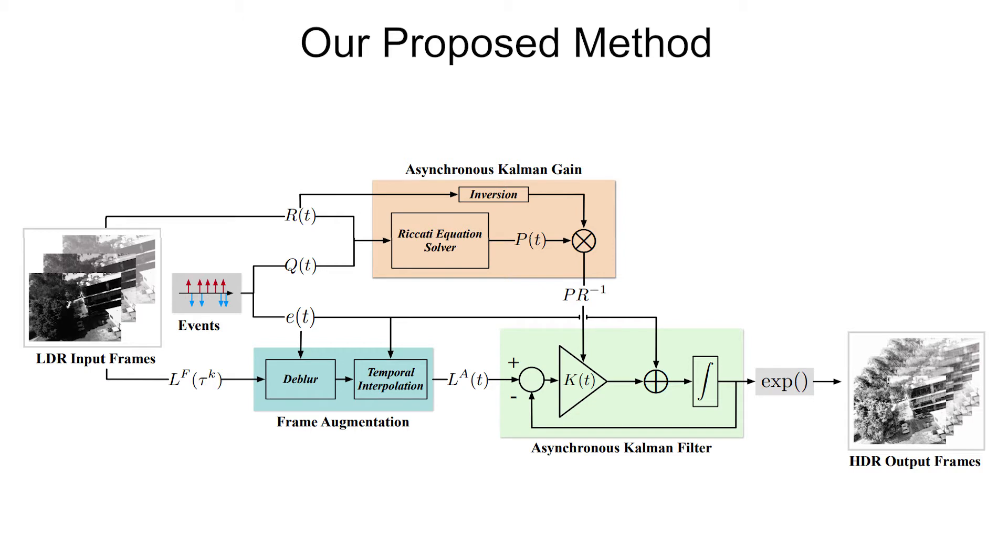Our method consists of three components: a pre-processing step called frame augmentation, asynchronous computation of the Kalman gain based on a proposed noise model for frames and events, and an asynchronous Kalman filter that combines event and frame information.